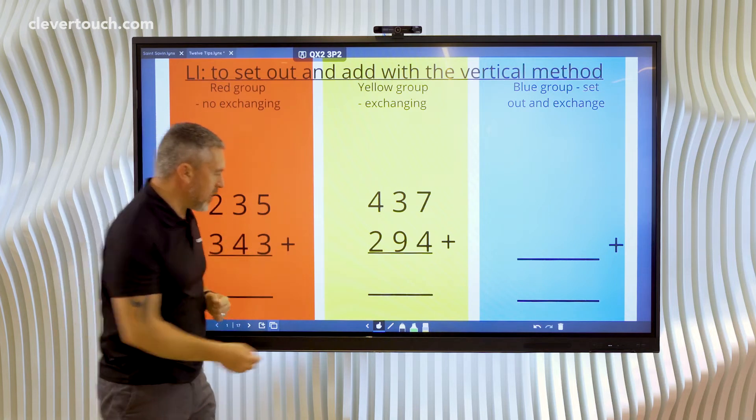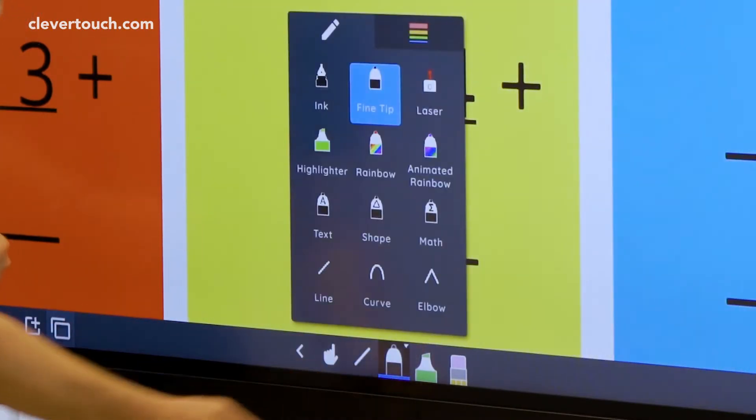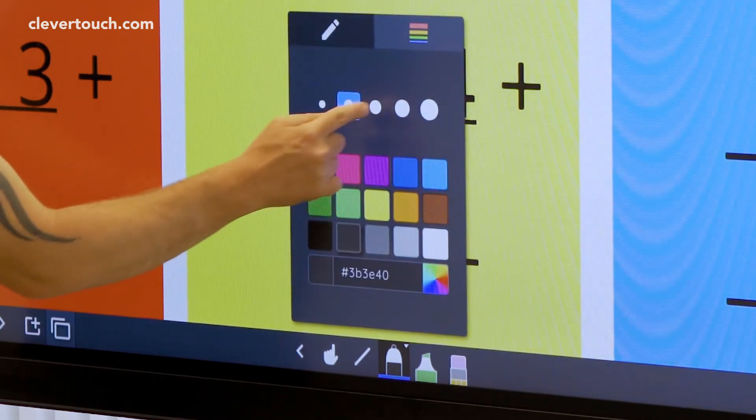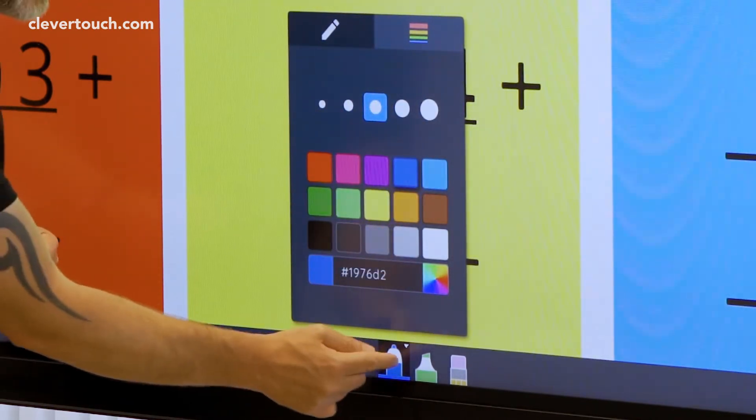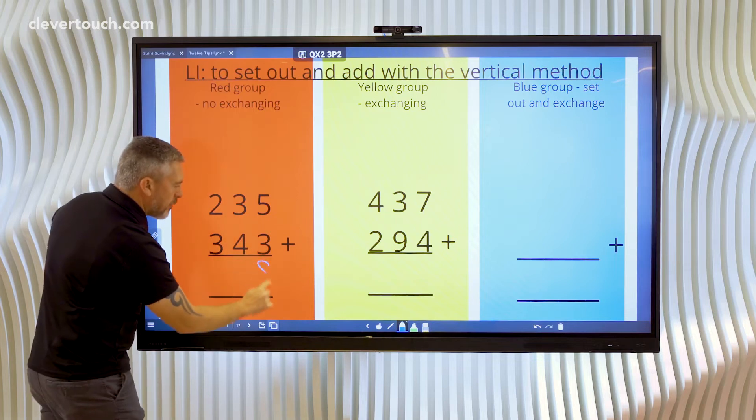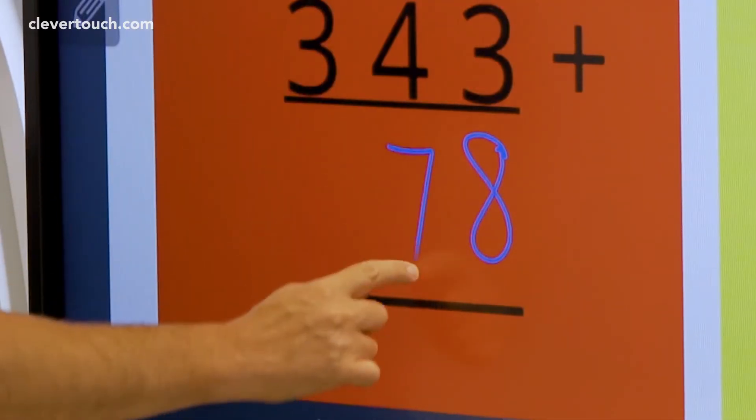The children would be able to start annotating on here. So for example we could grab a pen. We can make sure that it's at a thickness it's going to show up and a nice color. And we could start doing some of the equations directly on the screen.